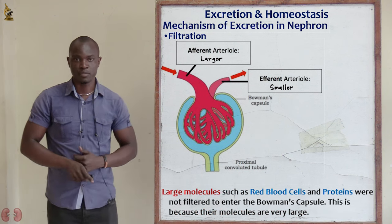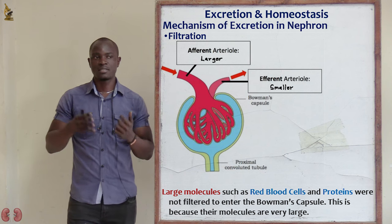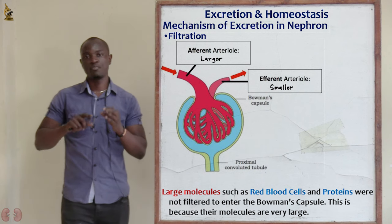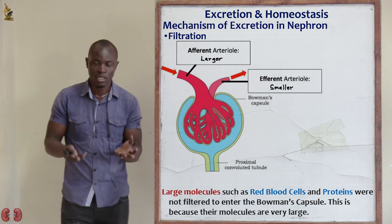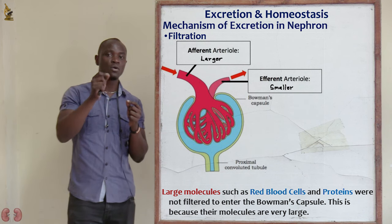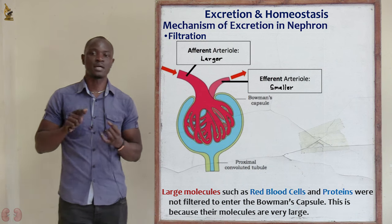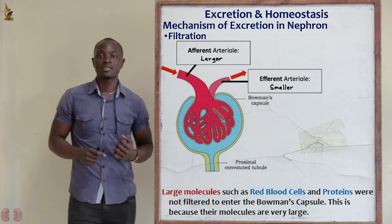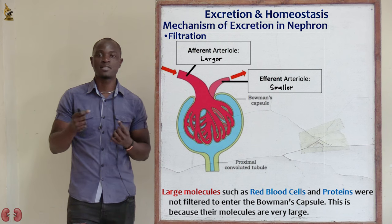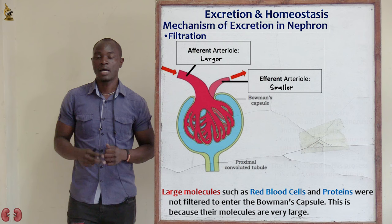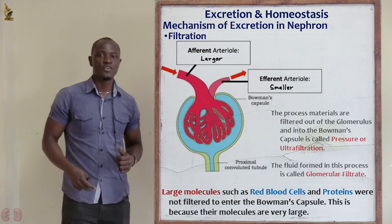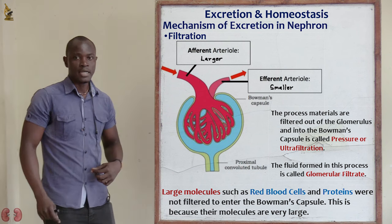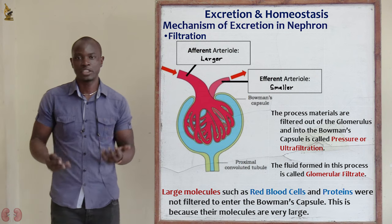Large-sized molecules such as proteins and red blood cells are not going to be filtered, because they are large and it is impossible for them to pass through the small holes of the glomerulus. So large-sized molecules like proteins and red blood cells are not going to be filtered out through the glomerulus and into the Bowman's capsule. This process of filtration — whereby materials are removed out of the glomerulus and into the Bowman's capsule — is referred to as ultrafiltration or pressure filtration.